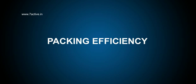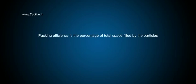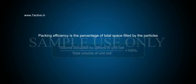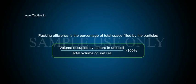Packing efficiency is the percentage of total space filled by the particles. It is calculated as the volume occupied by spheres in the unit cell divided by the total volume of the unit cell, multiplied by 100%.